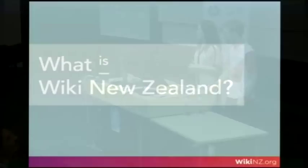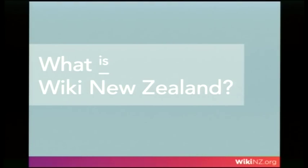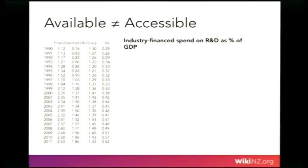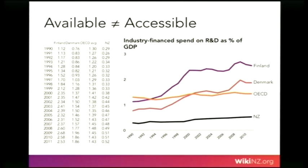So, what is Wiki New Zealand? We are bringing all of New Zealand's public data together in one place online and making it so that everybody can use it, so that it's visually explorable. For example, this is data showing industry finance spend on R&D as a percentage of GDP. If you look at that and try to identify the trends, it's going to take a little bit longer than if you look at a graph like this.